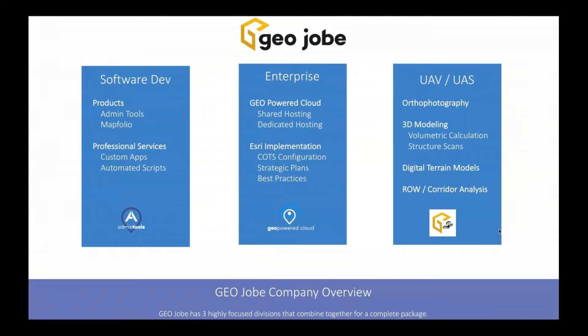GeoJobe has three verticals: a software development vertical, an enterprise vertical, and a UAV/UAS vertical. In our software development vertical we have products and professional services. If you're on this call today, you're probably a user of our Admin Tools or MapFolio products — great products that help you administer ArcGIS Enterprise or ArcGIS Online, or create a simplified view of your organization for end users.